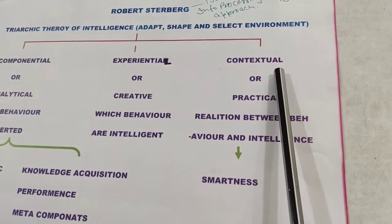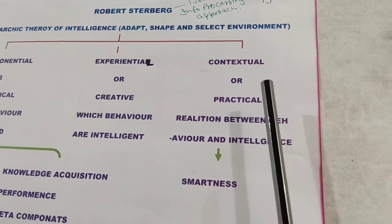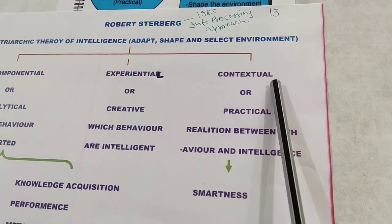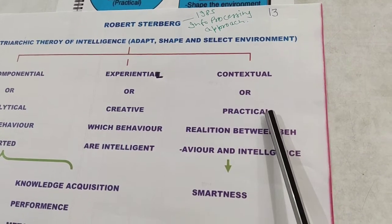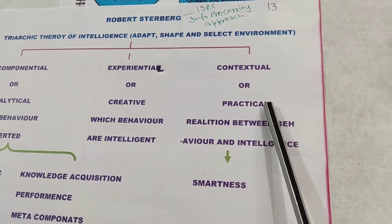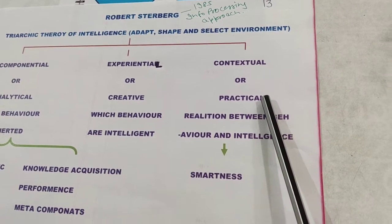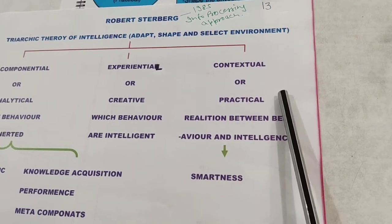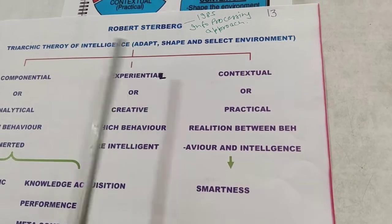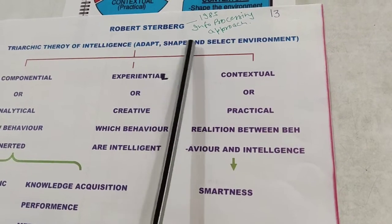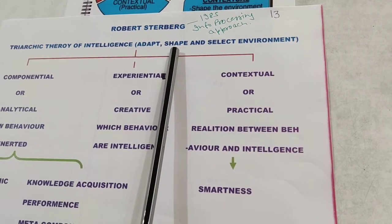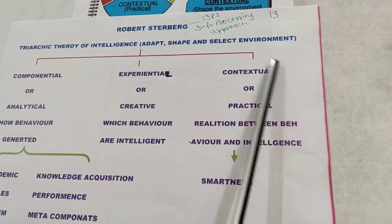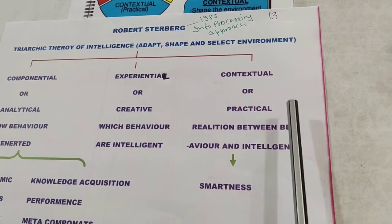The third type is contextual or practical intelligence — the intelligence we apply to real contexts and situations. It is practical, not theoretical. When aware of a specific problem or situation, we adapt to it, shape it, or select a different environment altogether. These three responses — adapt, shape, and select — describe how we fit ourselves to our environment using contextual intelligence.